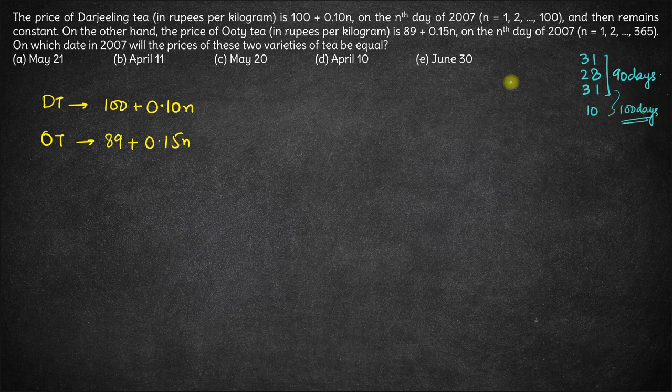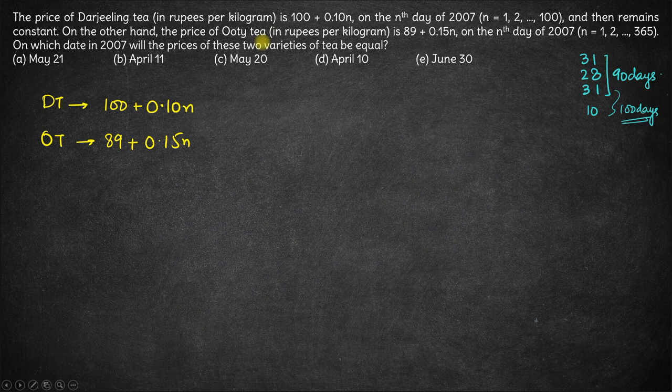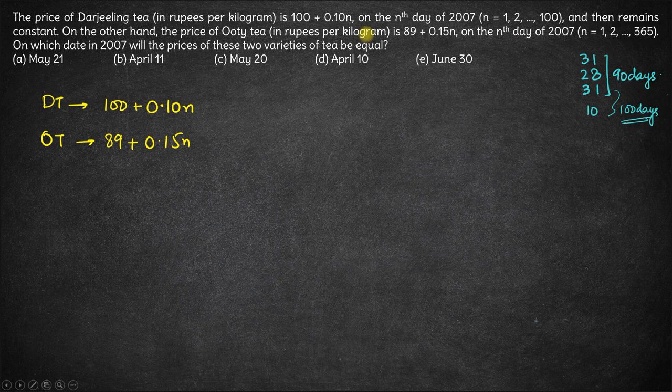In any case, even if you look at the options, the price of both the teas will not be equal before 100 days are over. It will be equal only after 100 days.